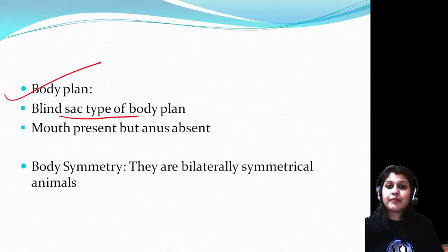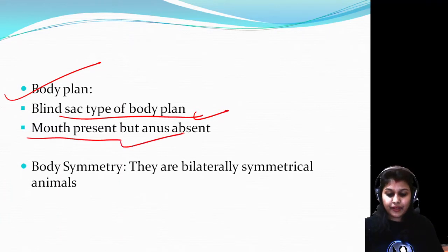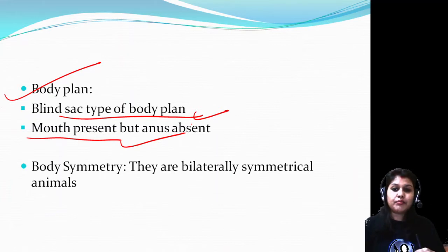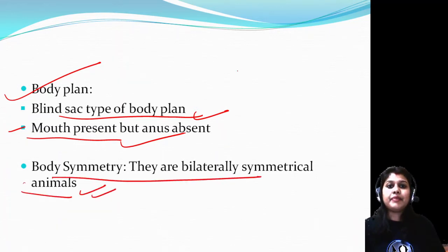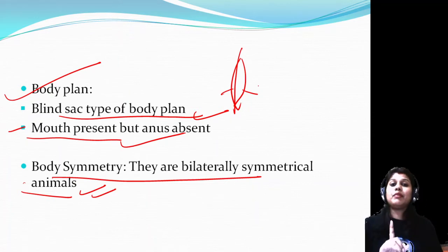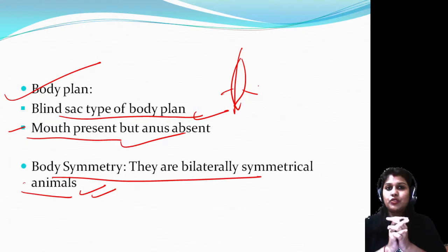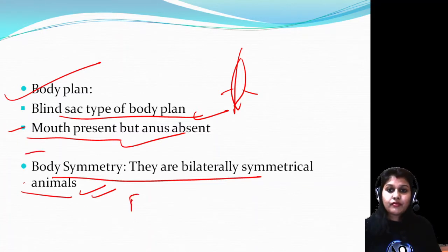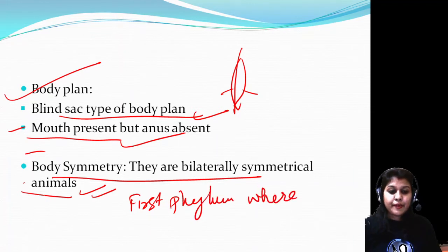Body plan: they have a blind sac type of body plan. Mouth is present but anus is absent, just like cnidarians. So undigested food comes out through the mouth. Body symmetry: they are bilaterally symmetrical animals - when divided, they can be split into equal halves. Remember that cnidarians were radially symmetrical. Platyhelminthes is the first phylum where bilateral symmetry started.